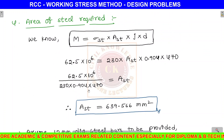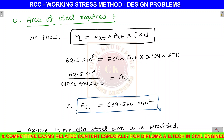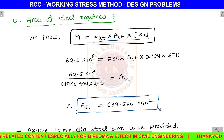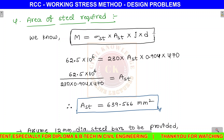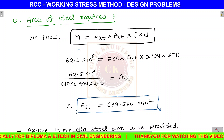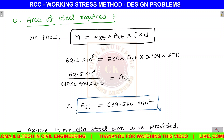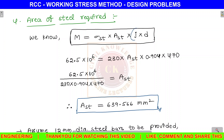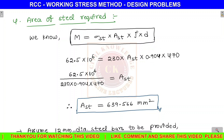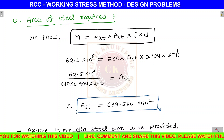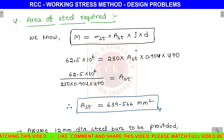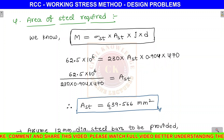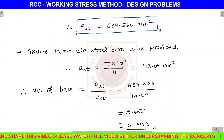Next, find the area of steel required. Using the formula M = sigma ST × AST × J × D: 62.5 × 10⁶ = 230 × AST × 0.904 × 470. Solving for AST: AST = 639.566 mm². That is the required area of tension steel.